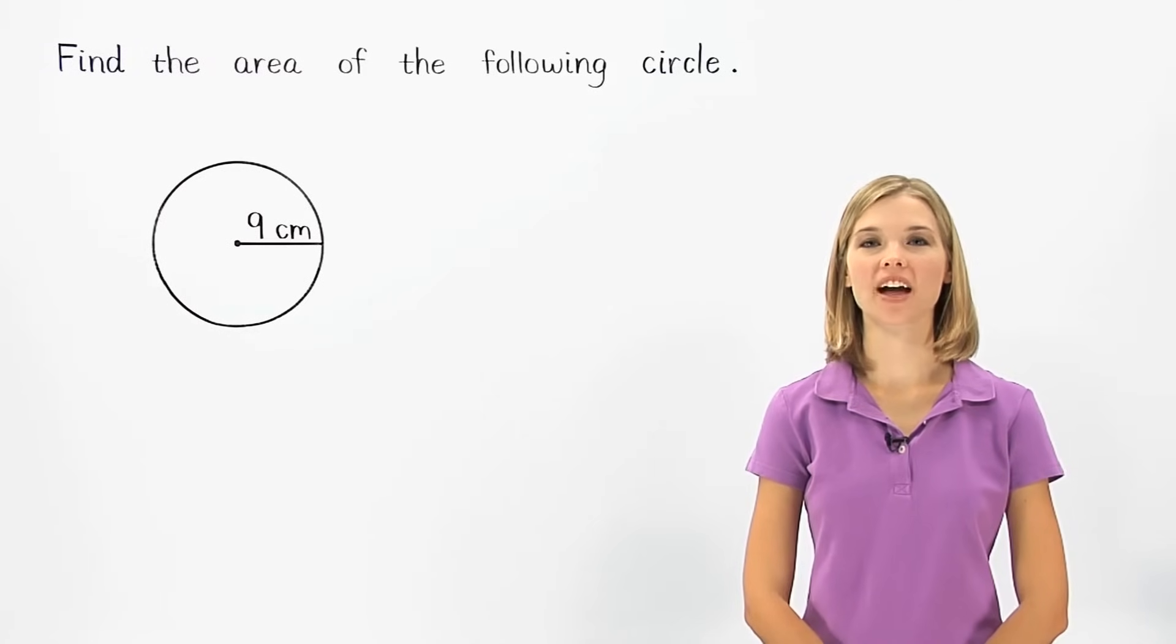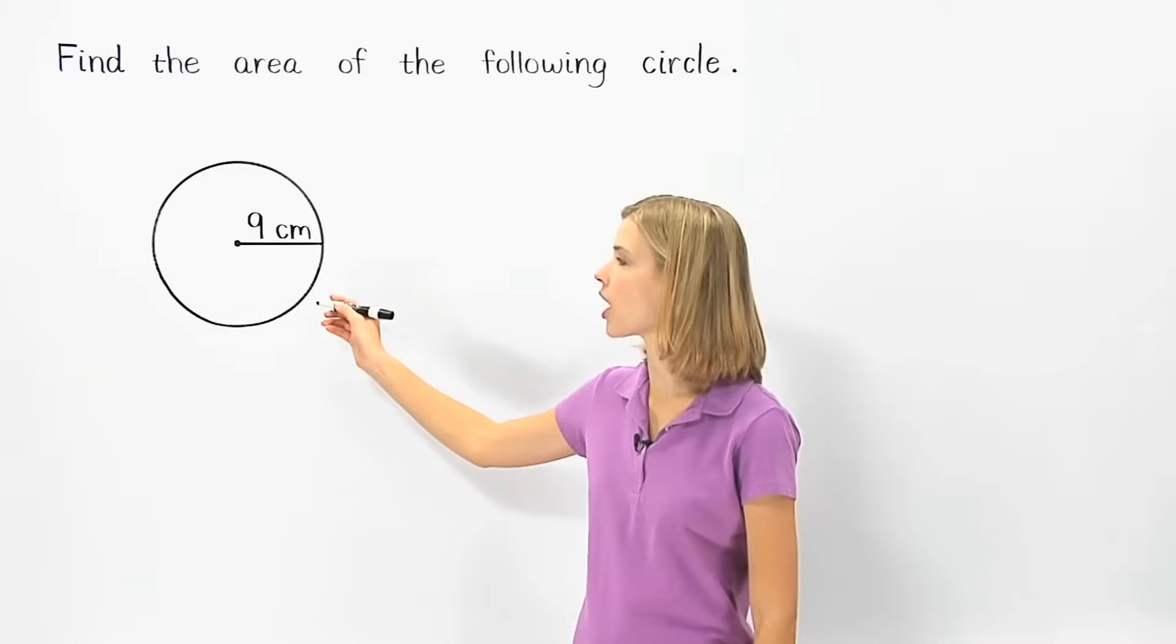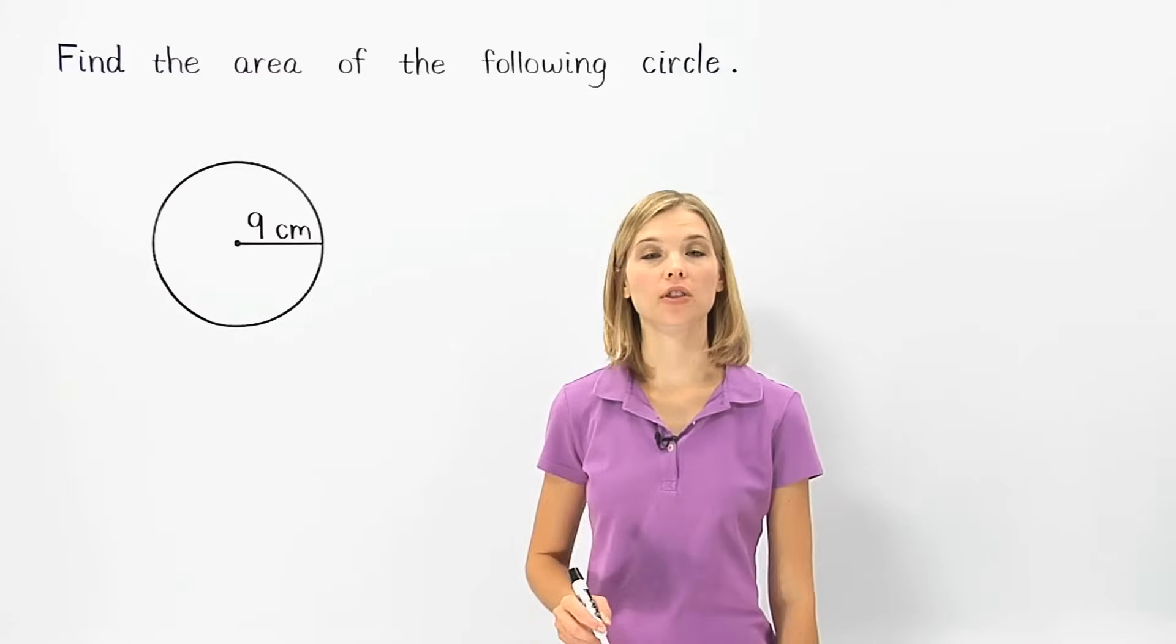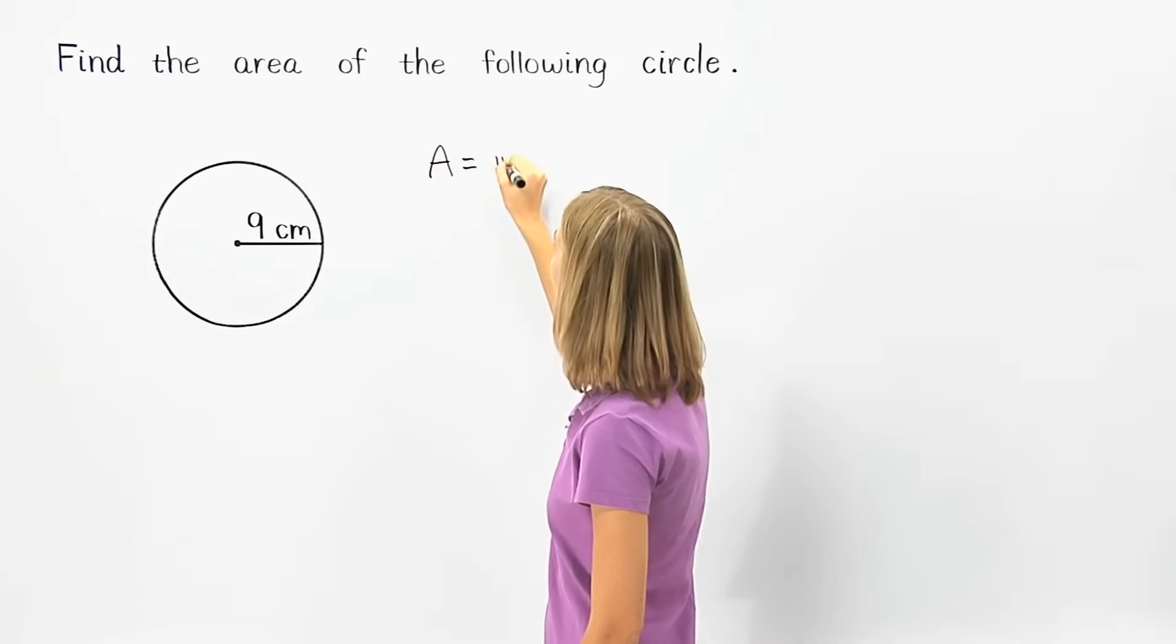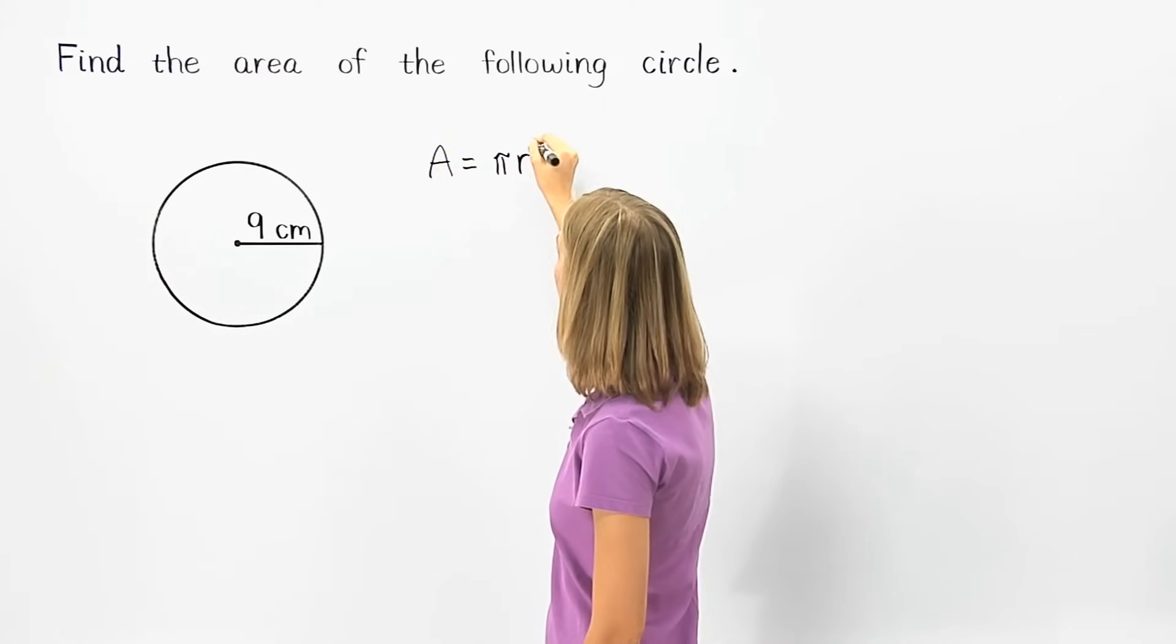In this example, we're asked to find the area of the circle shown. The formula for the area of a circle is area equals pi times radius squared.